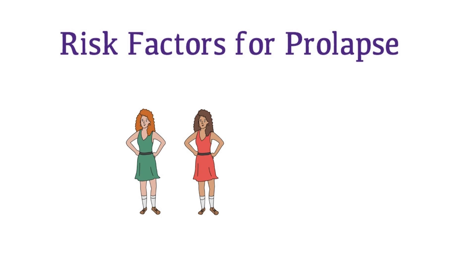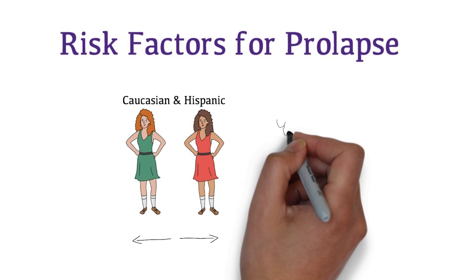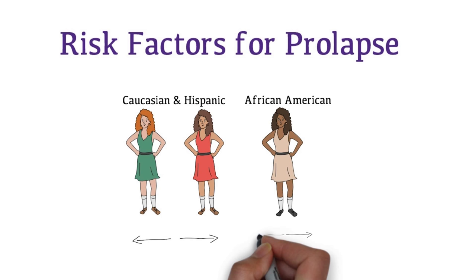Prolapse is more common in Caucasian and Hispanic women. Caucasian and Hispanic women tend to have a wider, gynecoid pelvis. African American women tend to have a narrow pelvis. They have a smaller pelvic floor area which protects against prolapse.